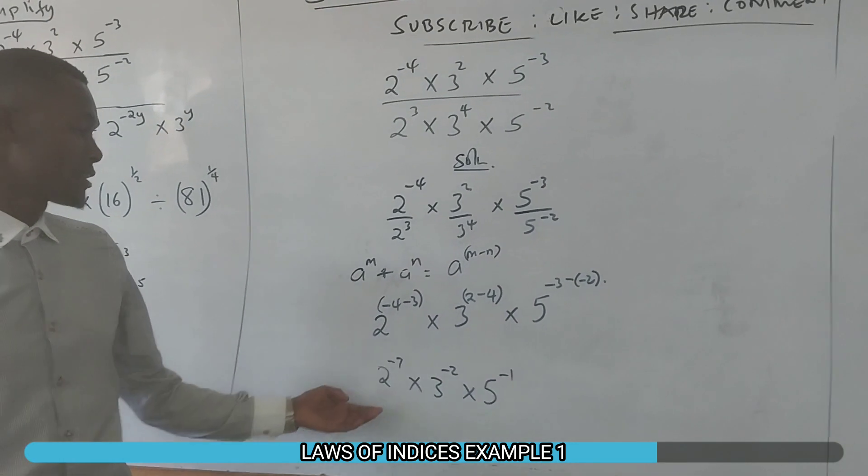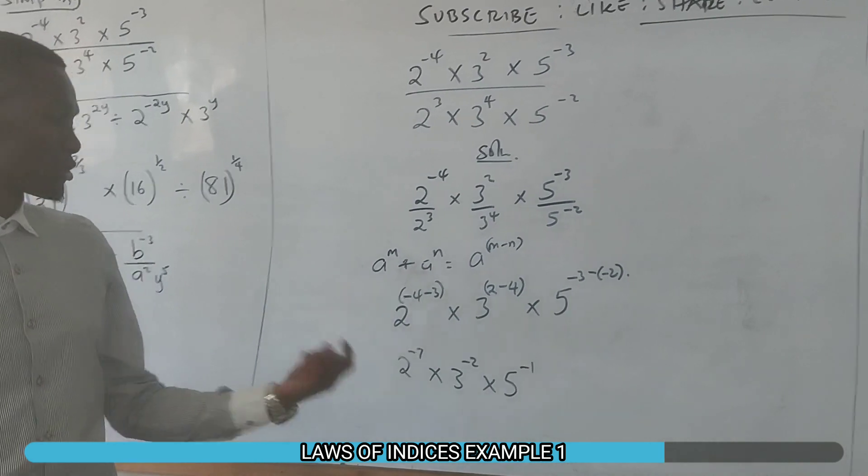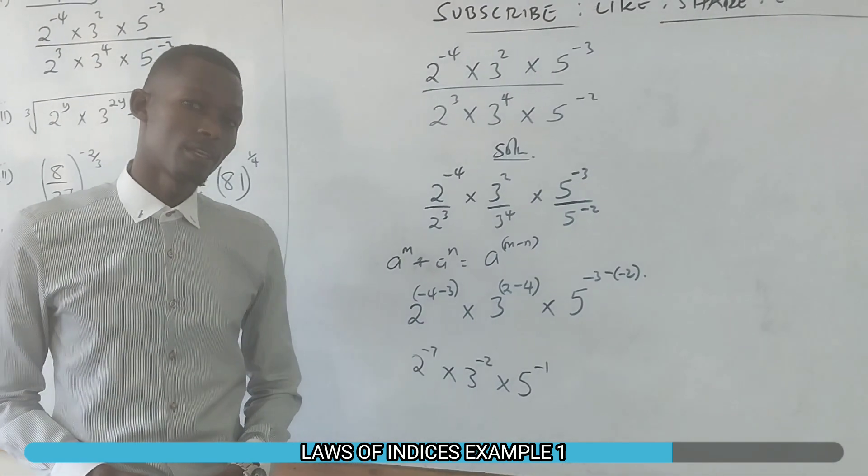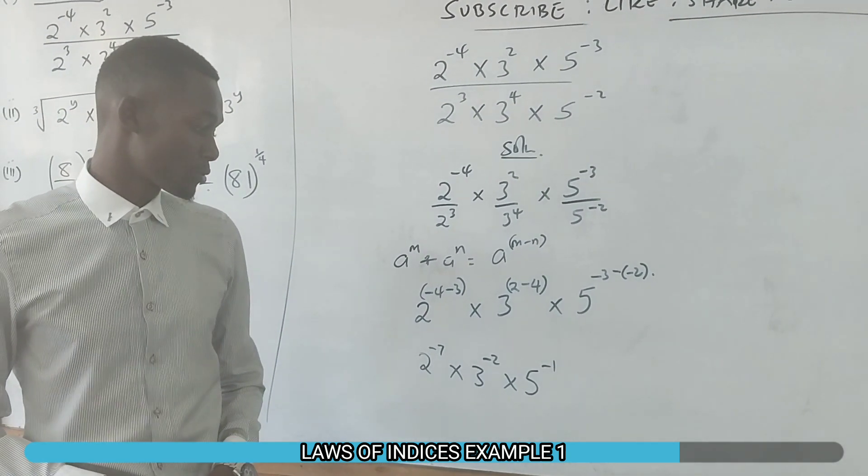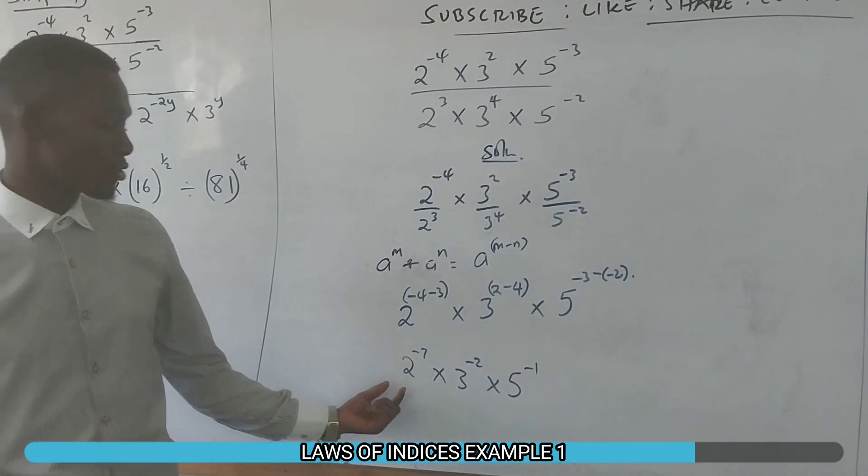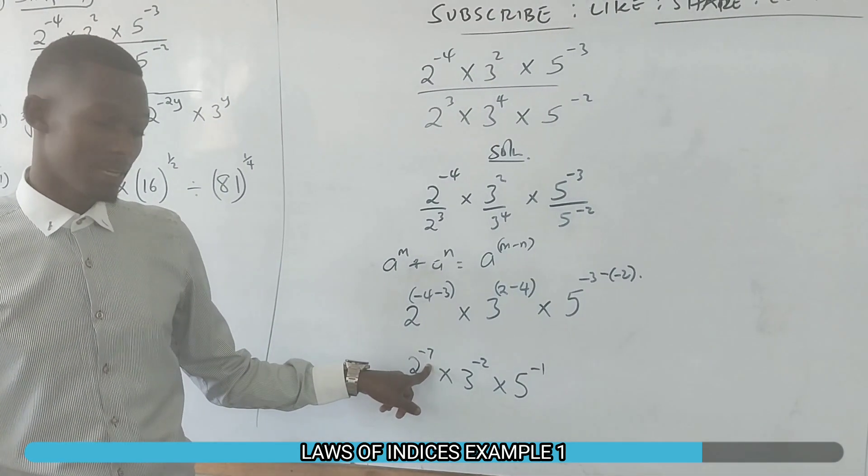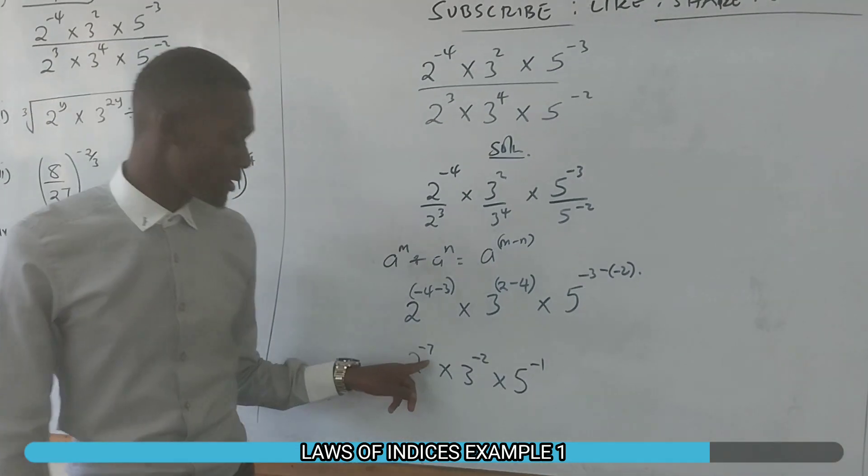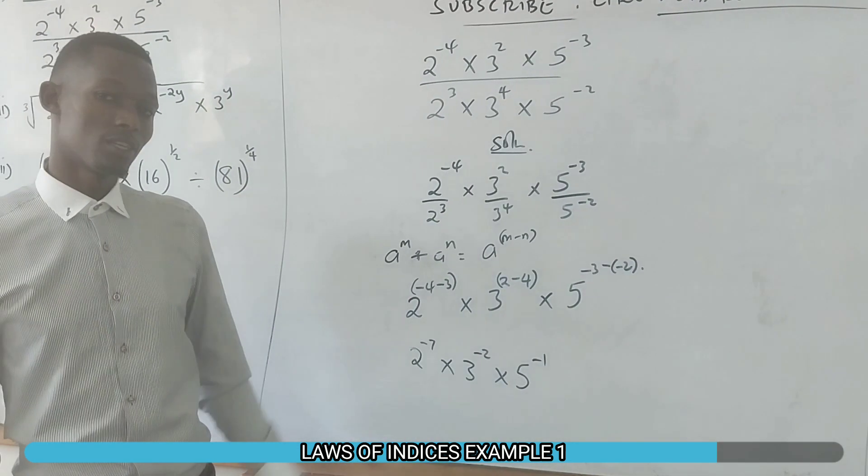Therefore, after simplification, we get 2^-7 × 3^-2 × 5^-1. But if we want to leave our indices as positive indices, we use the rule of negative exponents: if a number has a negative index, it becomes a reciprocal with the power becoming positive.